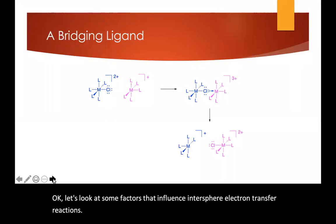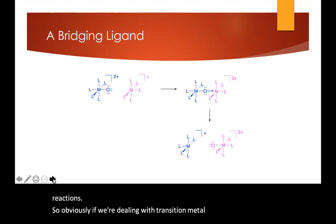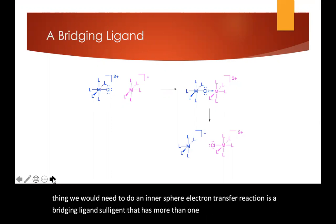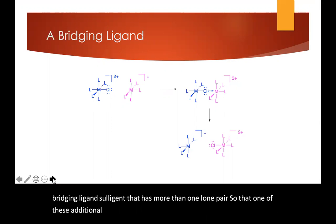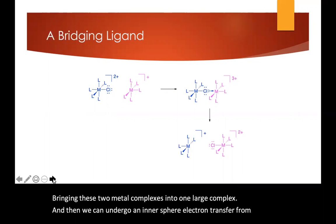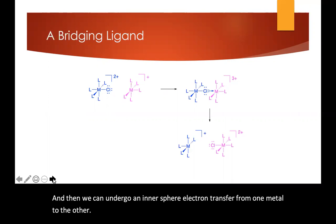So obviously, if we're dealing with transition metal complexes, the first thing we need to do an intersphere electron transfer reaction is a bridging ligand, a ligand that has more than one lone pair so that one of these additional lone pairs can donate to a second metal, bringing these two metal complexes into one large complex. Then we can undergo an intersphere electron transfer from one metal to the other. That's sort of the starting level requirement.